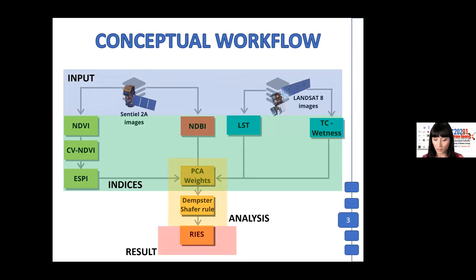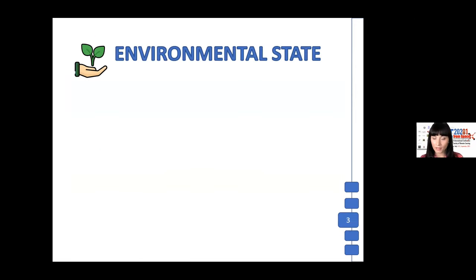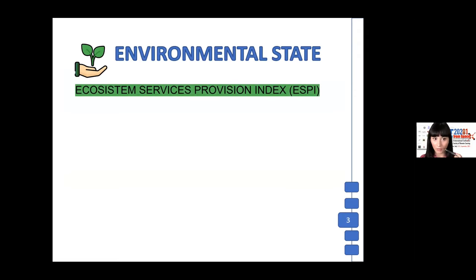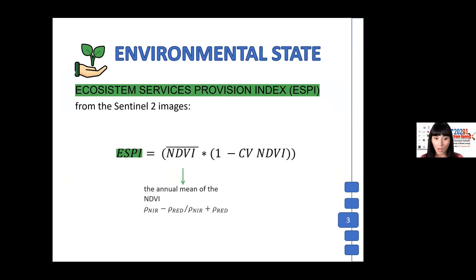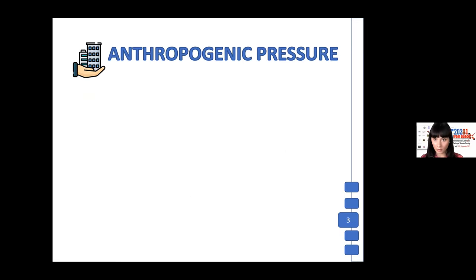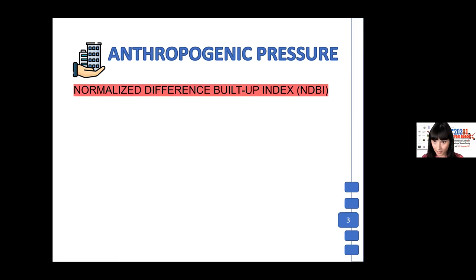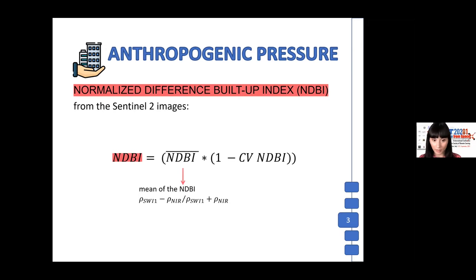For the first category of indicators, we calculated the ecosystem services provision index, ESPI, from Sentinel-2 images, considering two different types of seasonal dynamics of the NDVI: the annual mean of the NDVI and the intra-annual coefficient of variation of the same. Then in the second category, we calculated the normalized difference buildup index, which is very similar to the previous index, because we considered the mean of the NDBI and the coefficient of variation of the same.